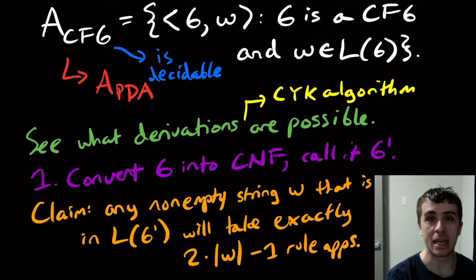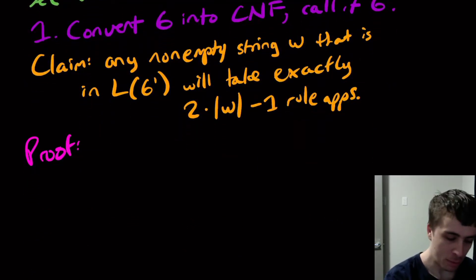Because once we have it in CNF, then we just try all possible rule applications of length 2 times the length of the string minus 1. Just try them all. And if any of them work, then we have successfully generated w. And if none of them work, then it's impossible to generate w because of this claim. So how do we prove this claim?